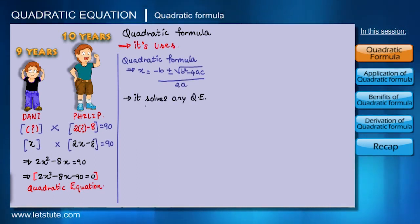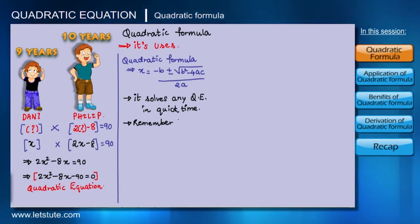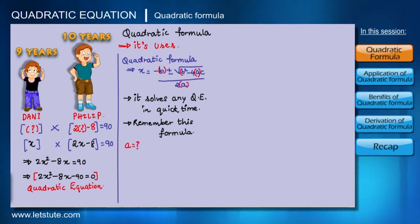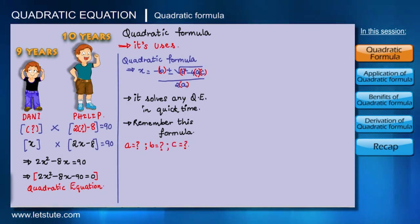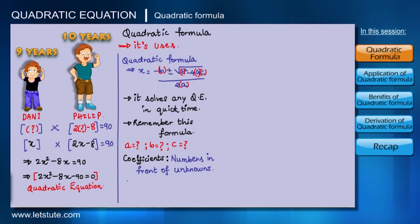The good thing is that this quadratic formula can solve every single quadratic equation very quickly. It may just look complicated, but we have to remember this formula for quick answers. Let's explore the formula a bit — what do the letters A, B, and C stand for? These letters are just the coefficients, meaning the numbers in front of the unknowns in the equation.